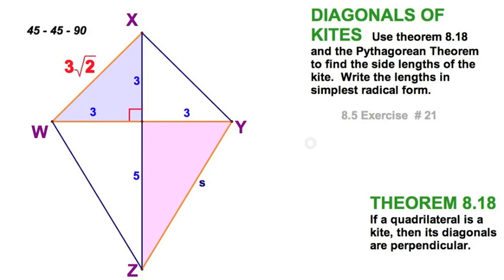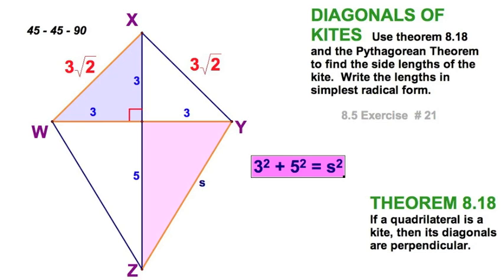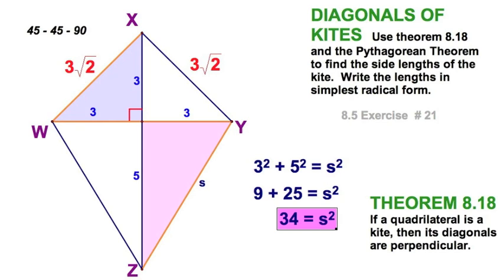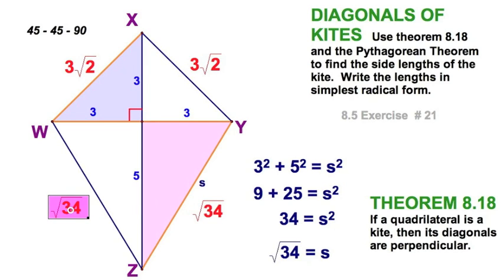First off, I have a 45-45-90 here: 3, 3, 3√2. So there we go with our 3√2s. This one is going to take the Pythagorean theorem, so let's get to it and add up those squares. So S is √34 — I just made up that variable for you. We've got √34 and √34. So those are the sides in simplified radical form.